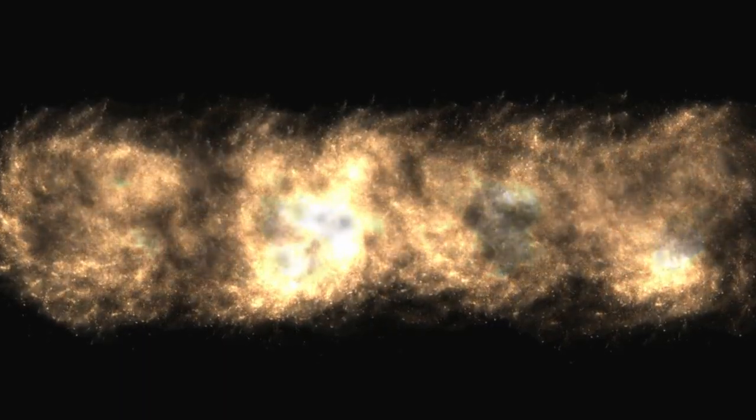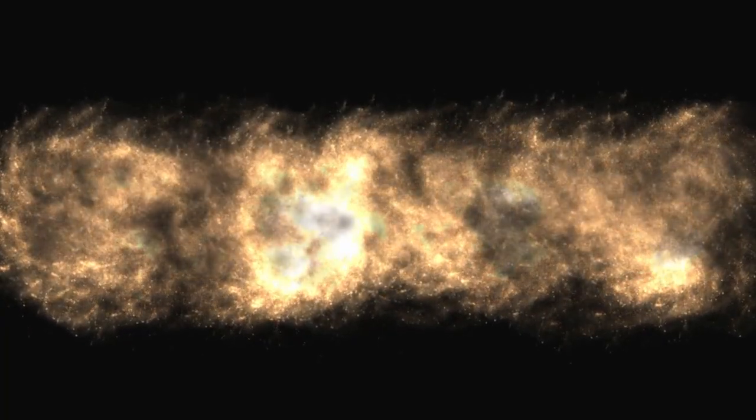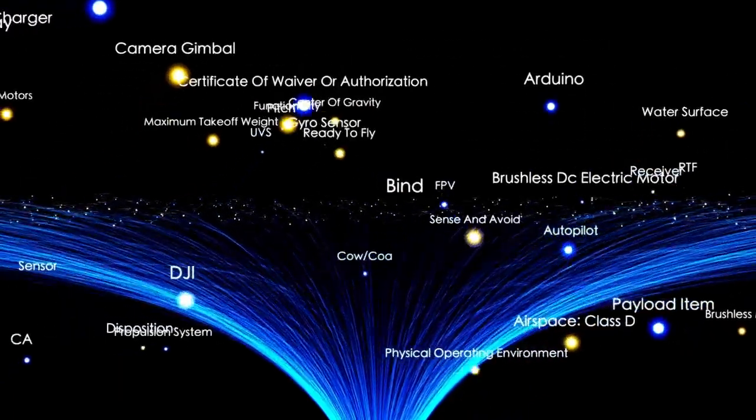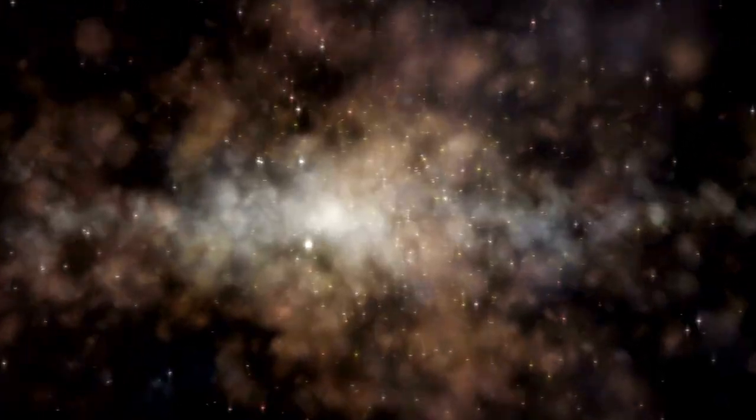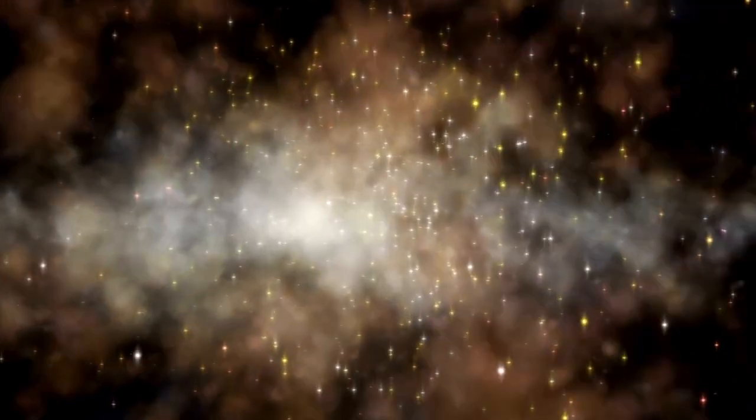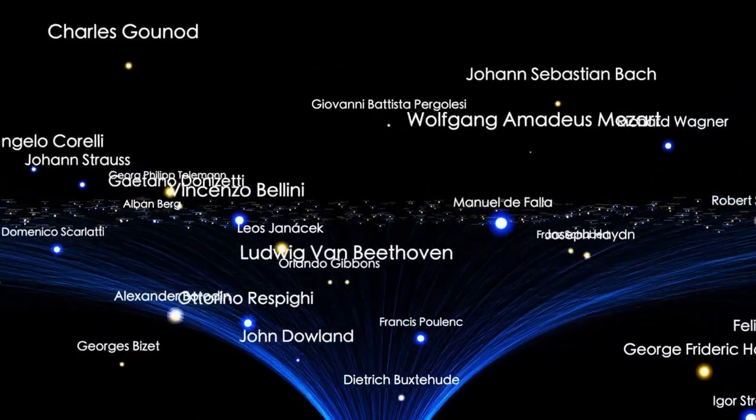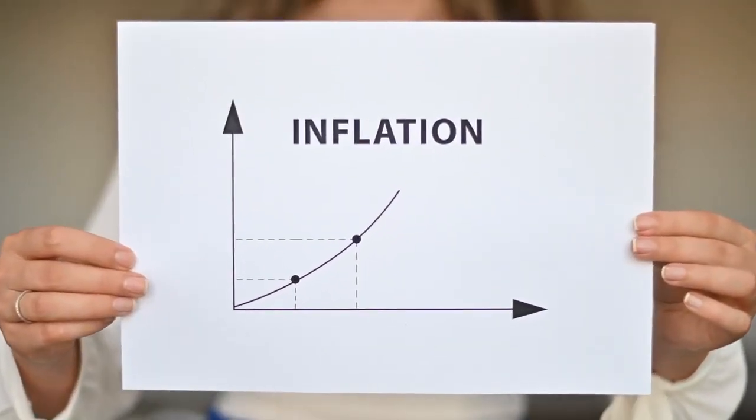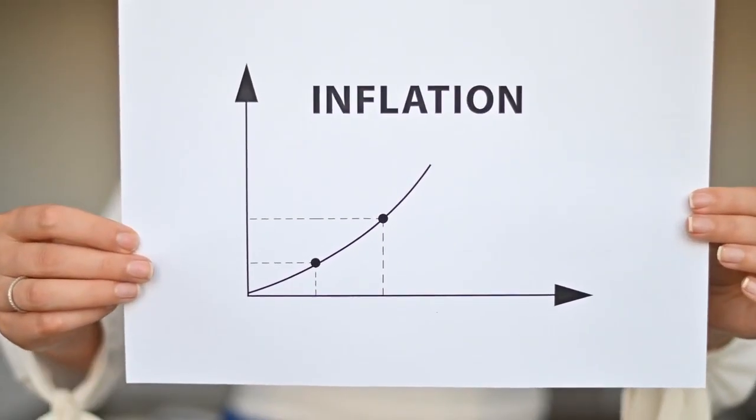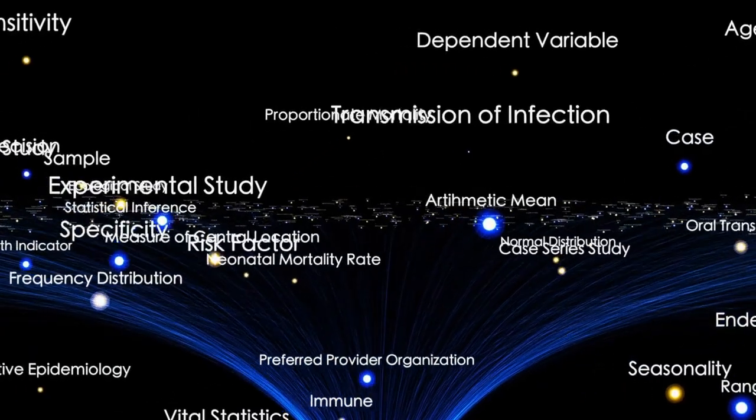The discovery of the exoplanet CHIP 65426 b dealt another blow to conventional thinking. Orbiting a young star just 15 million years old, this planet is a gas giant over seven times the mass of Jupiter, yet it lies farther from its host than Neptune does from our Sun. And that's not all—there is no visible debris disk around the star, which is typically considered essential for forming such a large planet. There is no known physical process that could explain how it came to exist in its current position. It's as if it appeared fully formed.